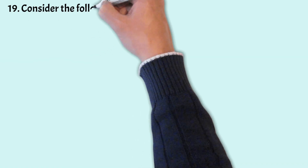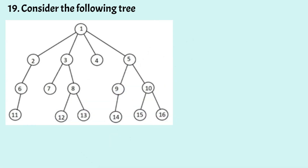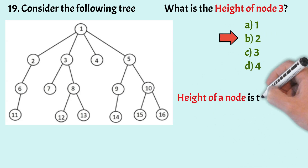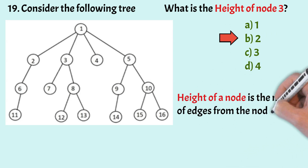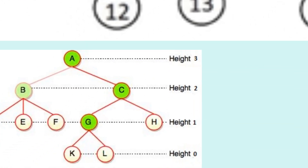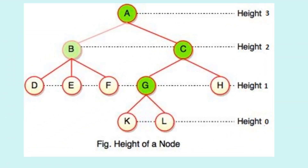The next question: considering the following tree, what is the height of node 3? The options are given. The correct answer is Option B, that is 2. The height of a node is the number of edges from the node to its most distant leaf node. In this example, node A has height 3, B and C have height 2, and G has height 1.